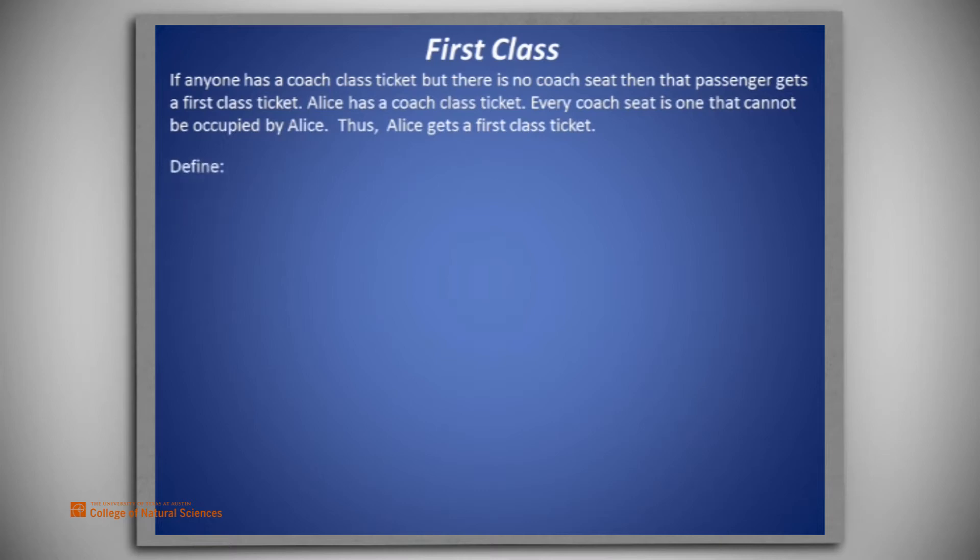Let's begin by defining A to be Alice, C(x) to mean x has a coach class ticket, O(x, y) to be person x may occupy seat y, and F(x) to mean x gets a first class ticket.